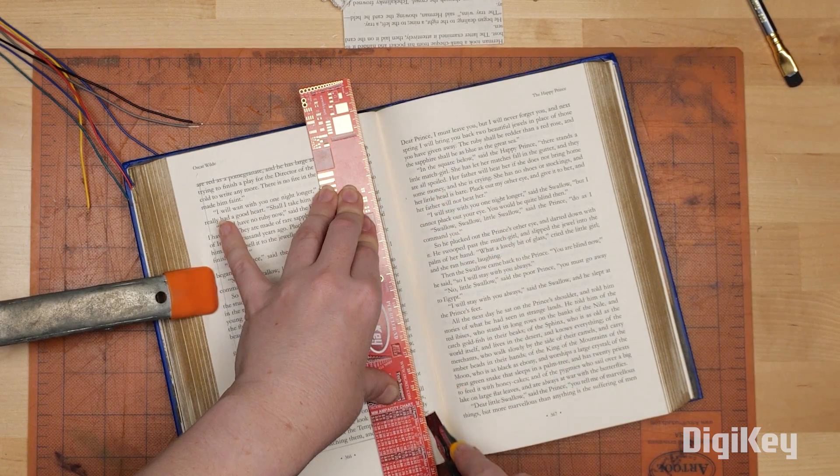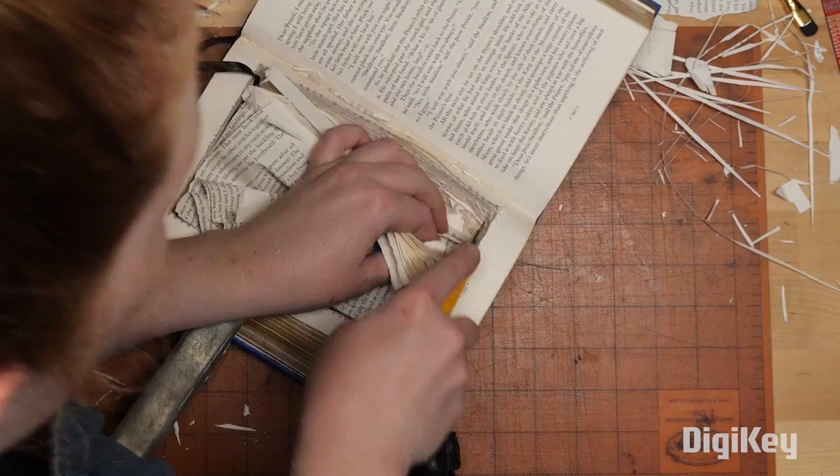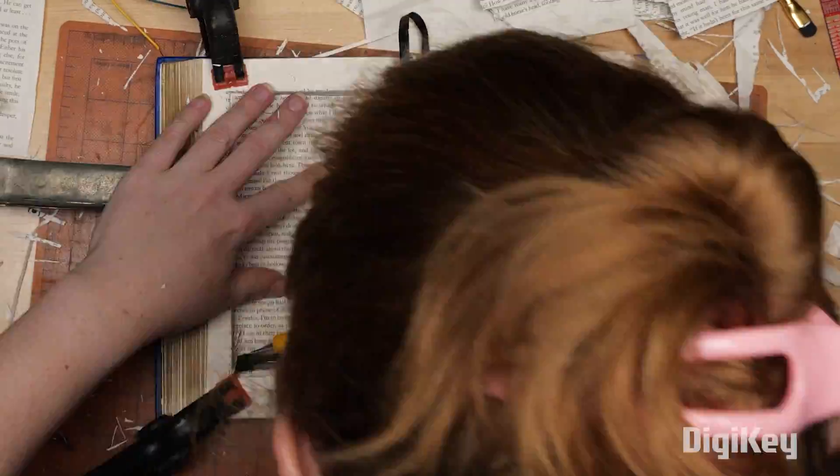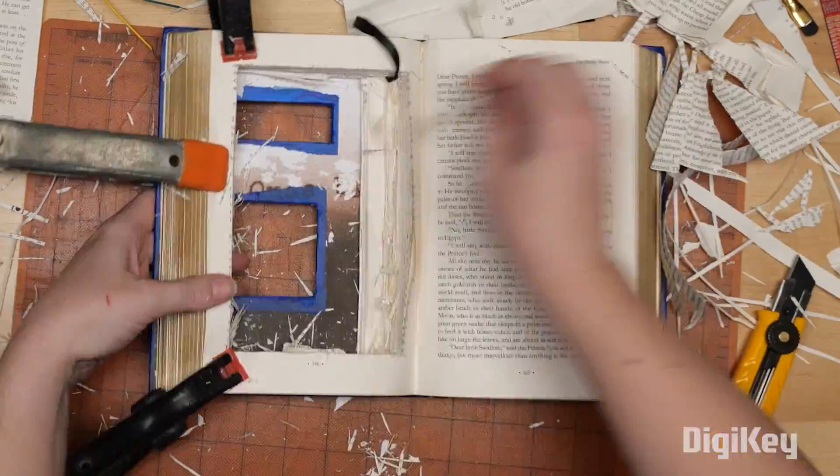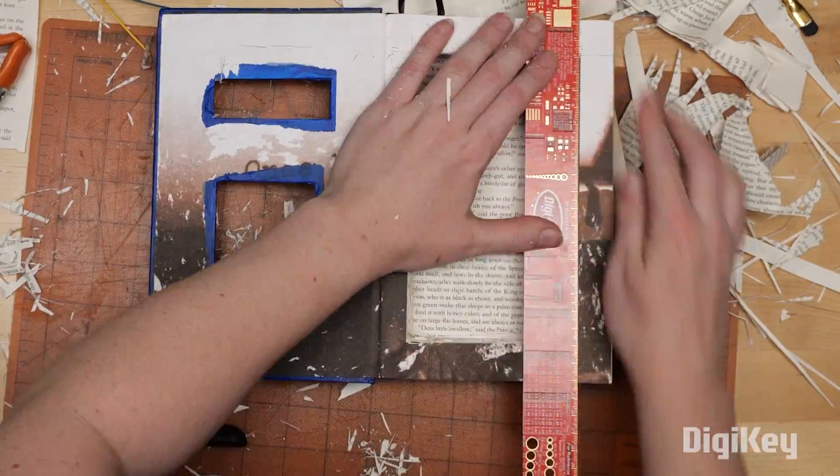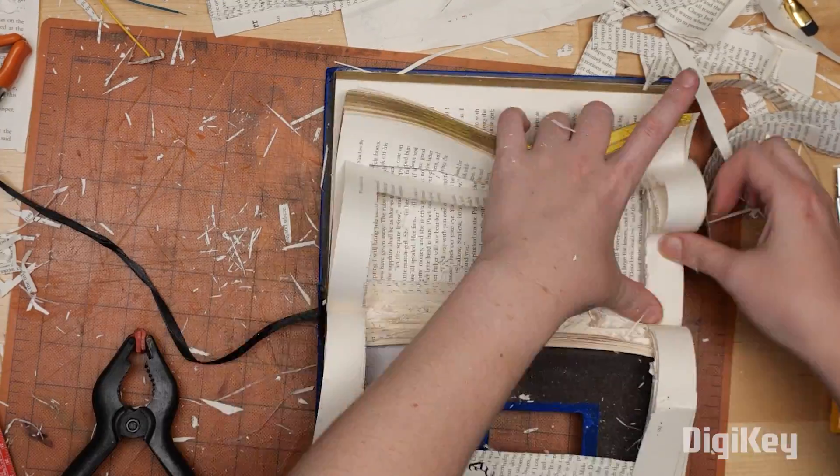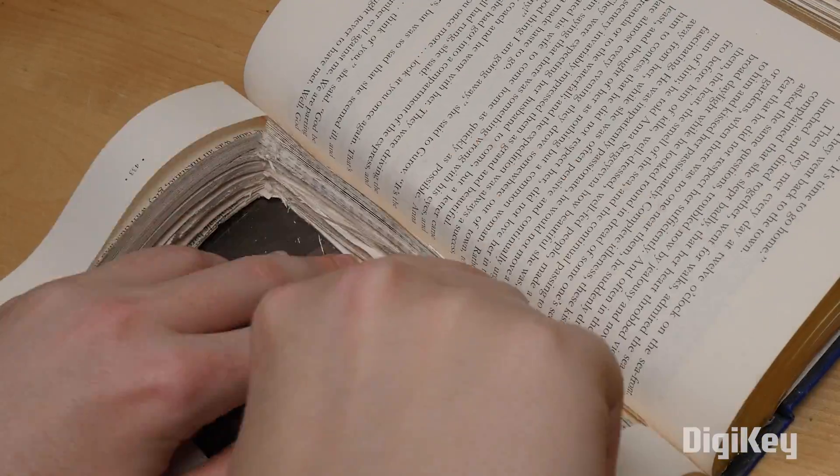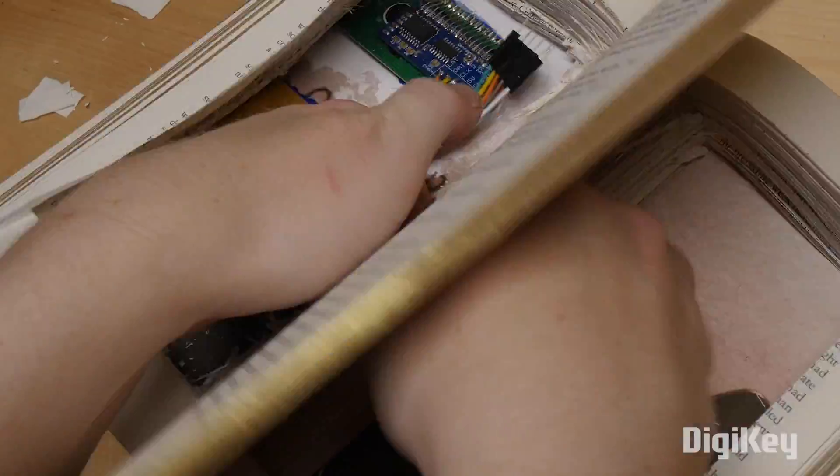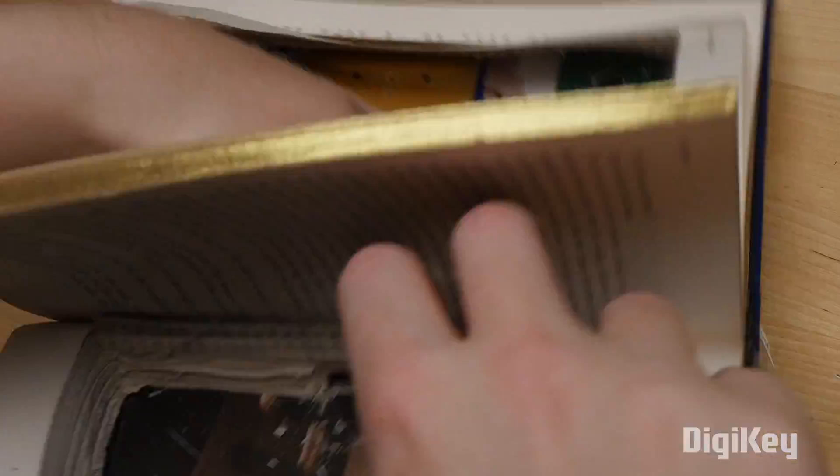The next step is where things start to get messy, cutting out the interior body of the book. I used a ruler and a utility knife to make progressively deeper cuts through the pages, and used some clamps to help hold the pages in place. I also cut a passageway through the bound edge so I could run wires between the two sides of the open book.